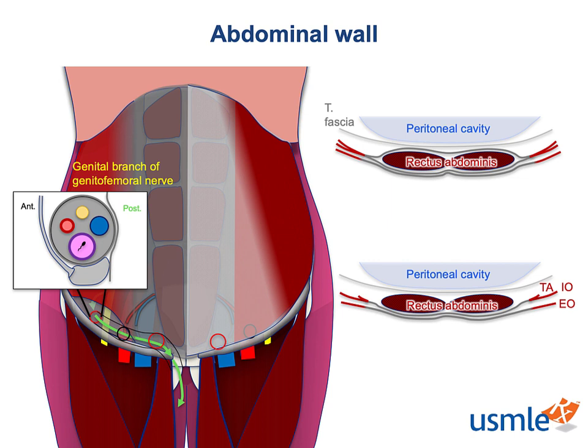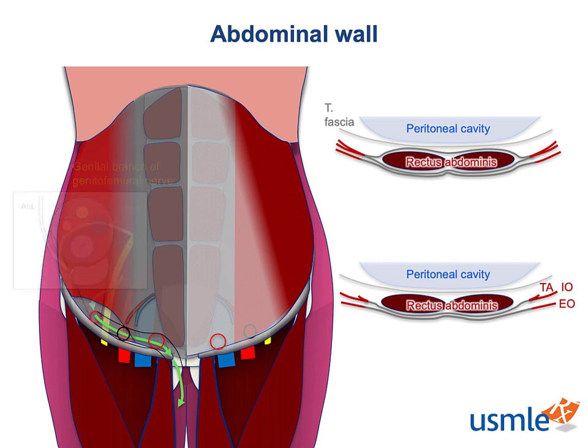Even females have an inguinal canal, but since it obviously doesn't contain a spermatic cord, a lot of people wonder what it even does. The genital branch of the genitofemoral nerve provides sensation to the labia, which are — and this is true — homologous to the scrotum. That fact never ceases to amaze me.